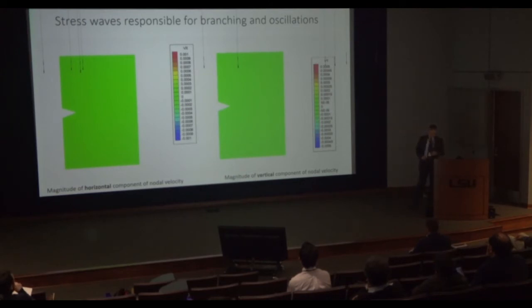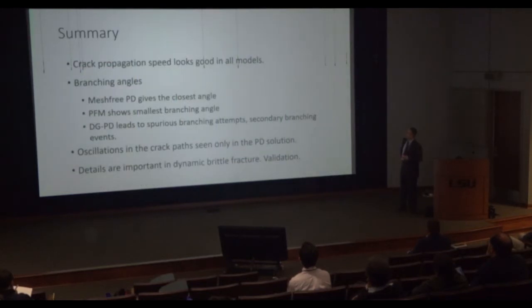So, in summary, what we've seen is that crack propagation looks good in all of these models. The branching angles, however, there's quite a bit of a difference. The best one, the closest one to the experiments was given by the bond-based peridynamics, the native one. Phase field shows the smallest branching angle. And then the discontinuous Galerkin in LSDyna leads to these spurious branching attempts and then secondary branching as well.